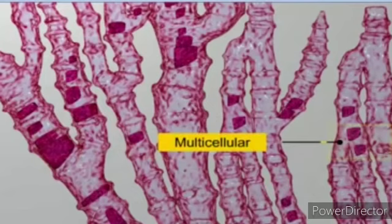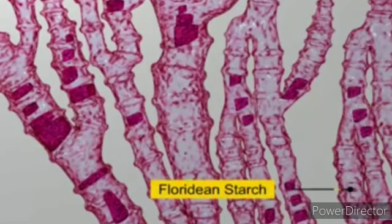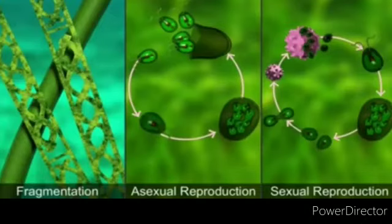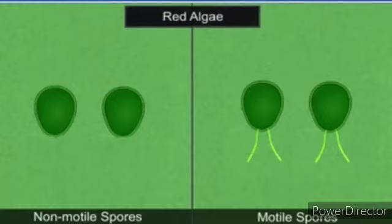The thallus of most red algae is multicellular, and some have complex body organization. Food is stored as floridean starch, which is very similar to amylopectin and glycogen in structure. Red algae usually reproduce vegetatively by fragmentation, asexually by non-motile spores, and sexually by non-motile gametes.